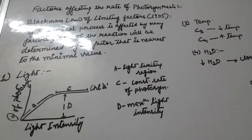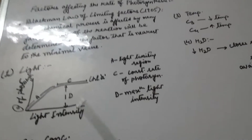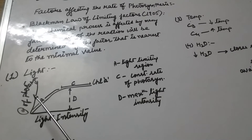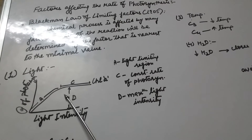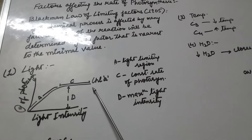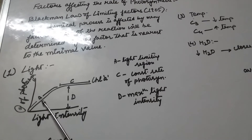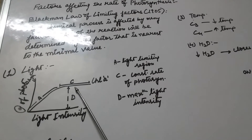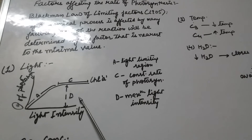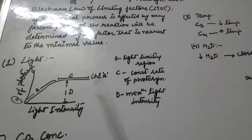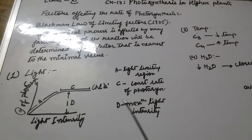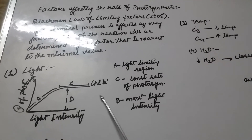The first factor affecting the rate of photosynthesis is light intensity. Consider a graph where the x-axis represents light intensity and the y-axis represents rate of photosynthesis. With a gradual increase in light intensity, the rate of photosynthesis increases until a constant stage is reached. Region A is the light-limiting region, and region C is where photosynthesis occurs at a constant maximum rate. Beyond this optimum level, increased incident light causes breakdown of chlorophyll A and thus decreases the rate of photosynthesis.